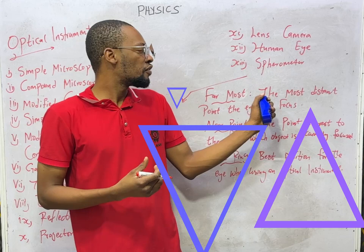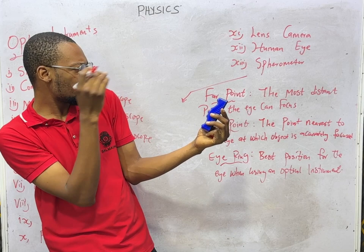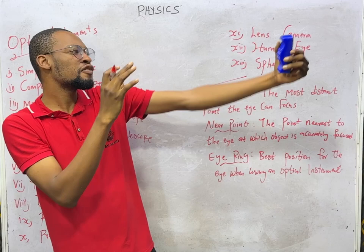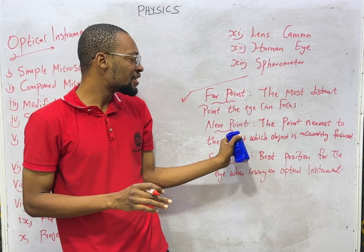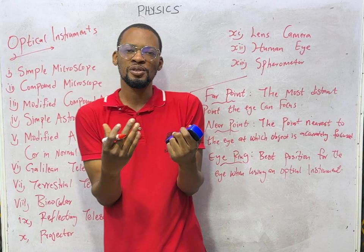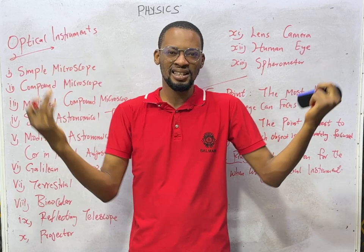And by the wayside, these are things you should be familiar with. Far point is the most distant point the eye can focus. Your far point is the farthest distance that your eye can still focus on an object. When an object is far or farther than your far point, you will not be able to focus that object very well. Meanwhile, near point is the point nearest to the eye at which an object can be accurately focused on the retina. Once it is more than the near point, the object cannot focus properly on the retina — you cannot see that object well, and your eye will not be able to accommodate that object very well.